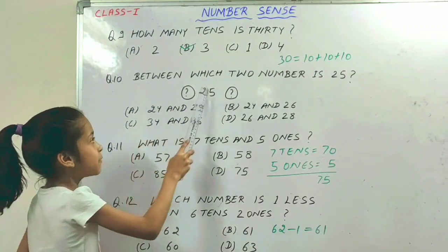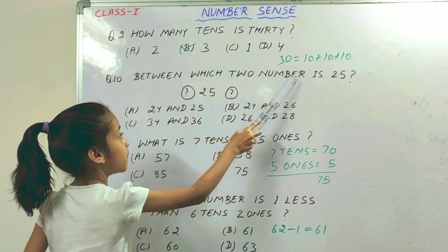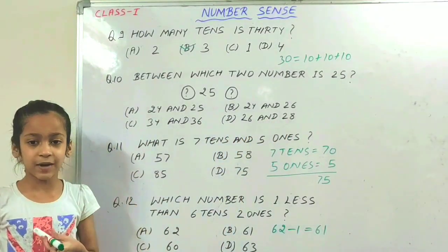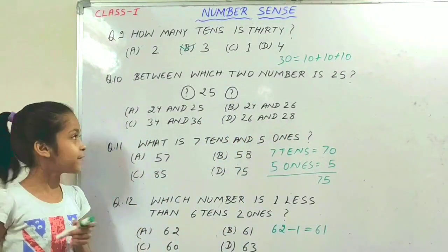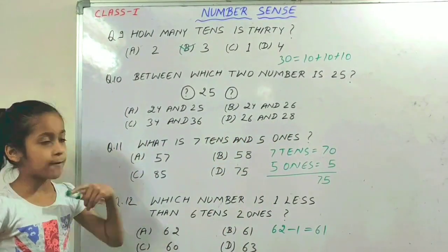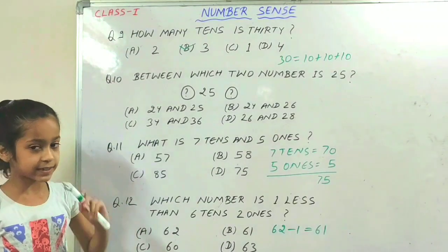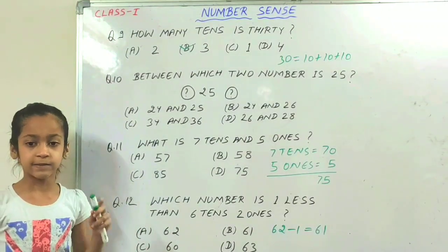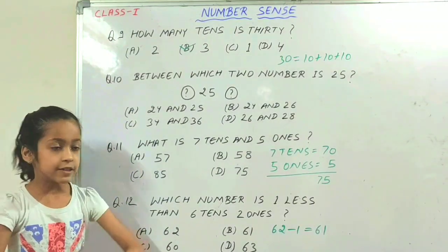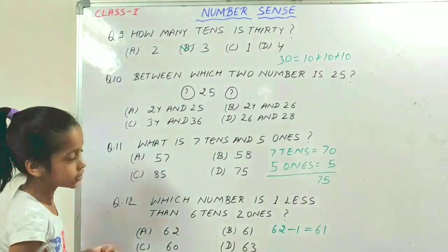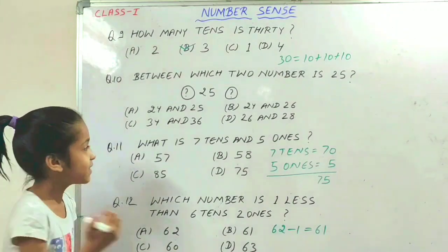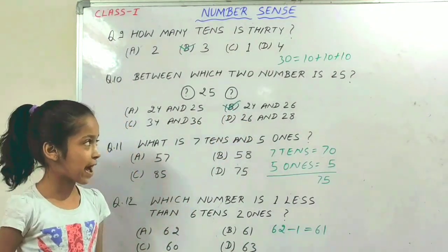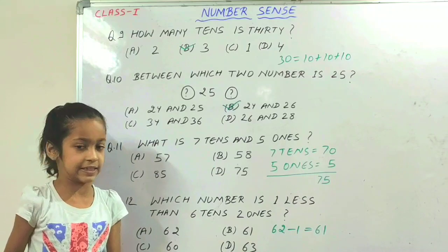The next question is: which numbers are neighbors of 25? After 25, 26 comes, and before 25, 24 comes. So option B is the correct option: 24 and 26.